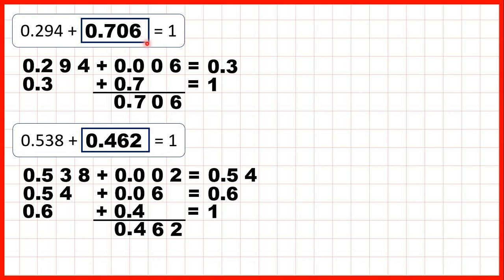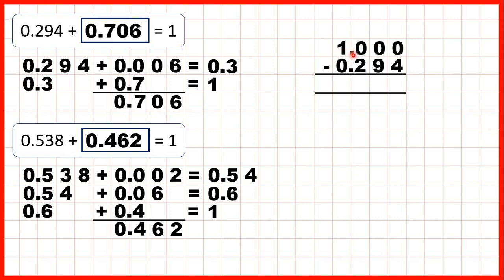The other way to solve these is to take 1 and subtract 0.294. We need to write the zero ones in our decimal underneath the one whole so that our place value columns are lined up. Now 1 is the same as 1.000. You can always write a decimal point and then zeros on the end of a whole number, because all the zeros tell us is that in the number 1 we don't have any tenths, hundredths, or thousandths.